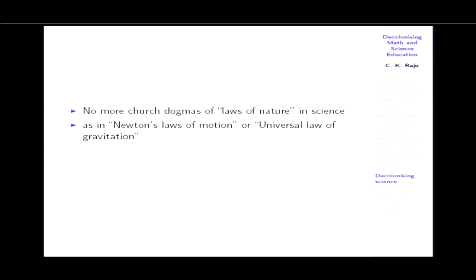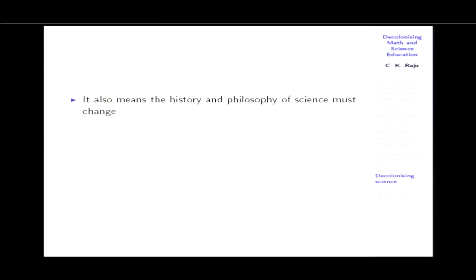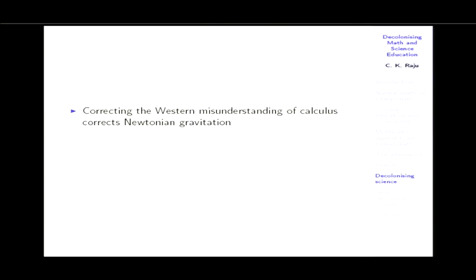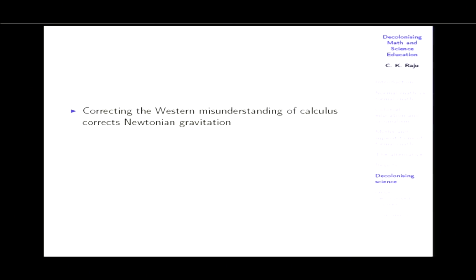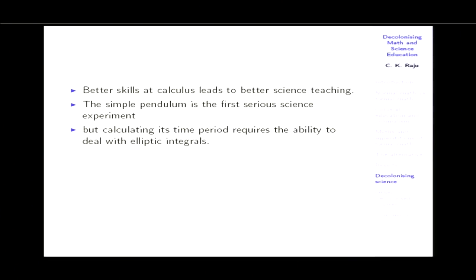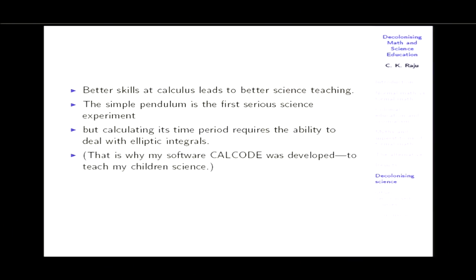It also means that history and philosophy of science must change — you can't glorify Newton and Leibniz who did not invent calculus and did not even fully understand it. Correcting Western misunderstanding does lead to a corrected version of Newtonian gravitation and alternative science in gravitation and quantum mechanics. Better calculus skill sets also lead to better science teaching — the simple pendulum, a thrown ball or javelin, and dealing with elliptic integrals. That's why I developed my software CalCode to teach children this kind of science.